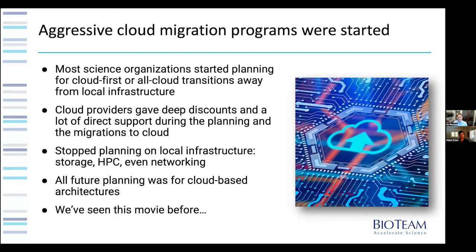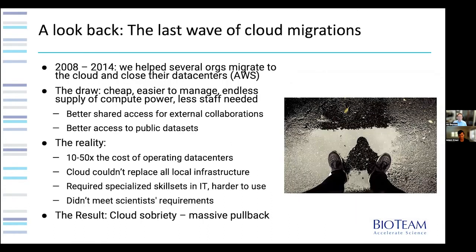Aggressive cloud migration programs started in almost every life sciences organization. All future planning was for cloud-first or all-cloud infrastructures, transitioning away from local infrastructure. People started talking about closing their data centers and reducing on-prem staff. Cloud providers gave deep discounts and direct support during planning and migrations. Local organizations really stopped planning on local infrastructure at all — storage, HPC, and even networking — which is counterintuitive given that you still have to move data to the cloud. Here at BioTeam we've seen this movie before: back in 2008 to 2014, we helped several organizations migrate completely to the cloud. AWS was really the only game in town.